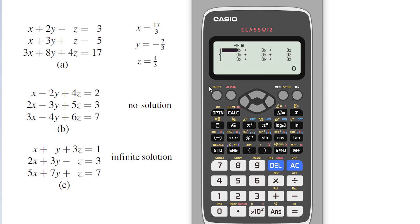So here it is. I have to press the values. So 1x plus 2y minus 1 equal to 3. I have to press 3.